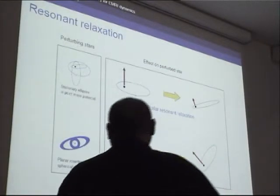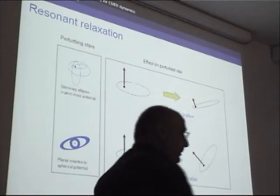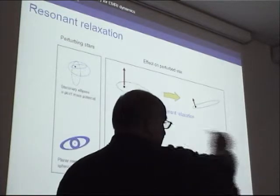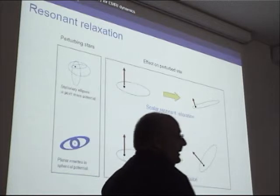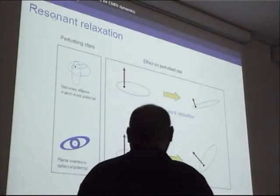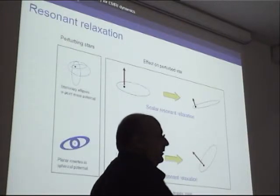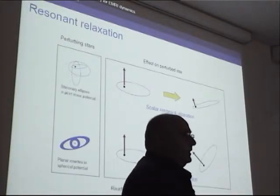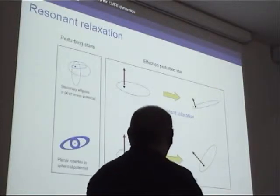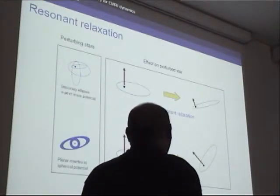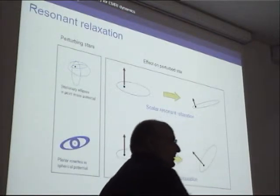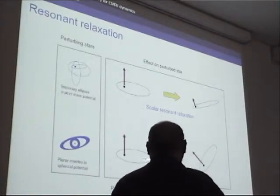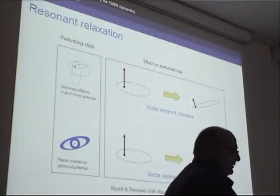A more general case is where the potential is just spherical, not necessarily Keplerian. In that case, the orbits do rosettes, and averaged over time these rosettes describe a circular annulus. For reasons of symmetry, in that case you can change the direction of the angular momentum but not its size. So if the orbit was circular, it will stay circular and will not approach the black hole. Because the first process can change the magnitude whereas the second cannot, we call the first scalar resonant relaxation — and that was the type Clovis was referring to mostly — and there is also vector resonant relaxation, which is very relevant in the galactic center.